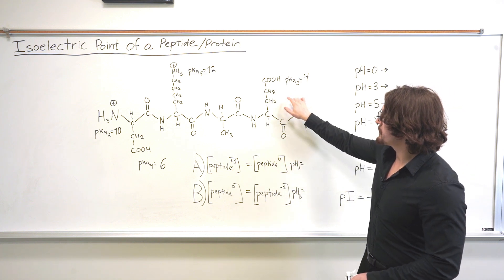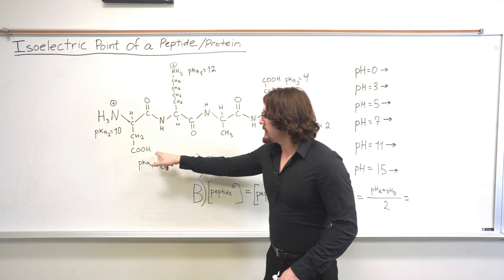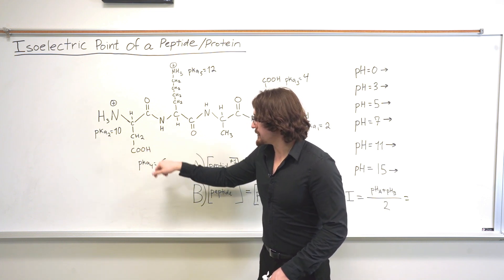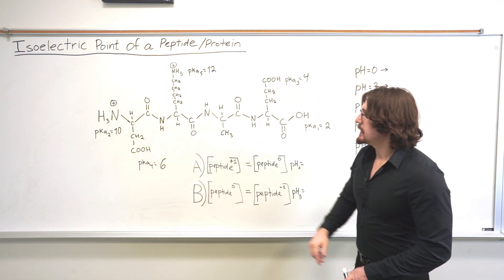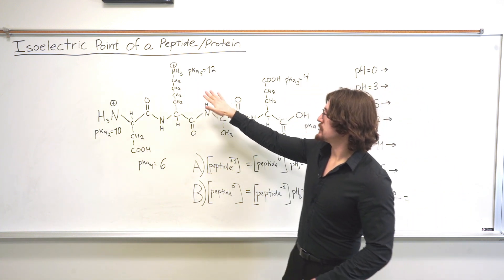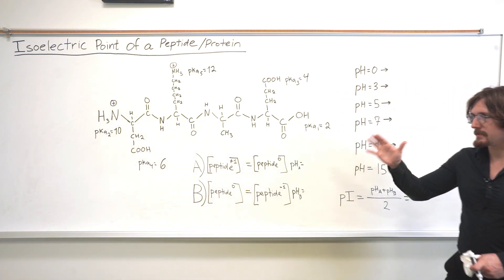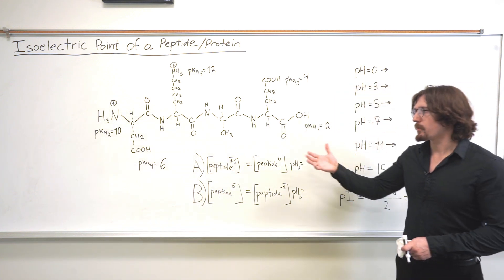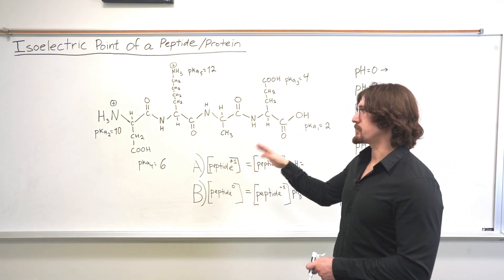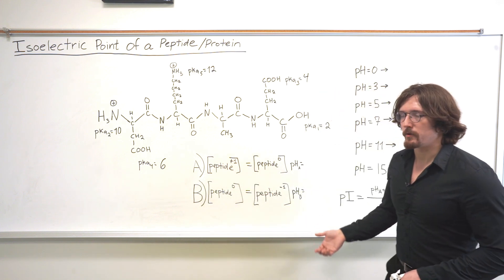pKa3 for the glutamate side chain is going to be around 4. pKa4 for the aspartate side chain is going to be around 6. And pKa5 for the lysine side chain is going to be 12. Those aren't exact values, but they'll work for this example. The real values should typically be given to you if you're asked a problem like this on the MCAT or in your biochem class.